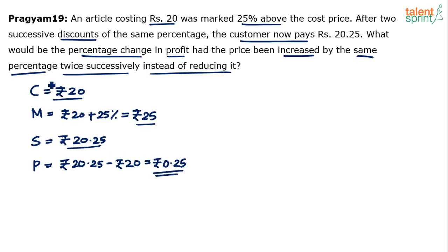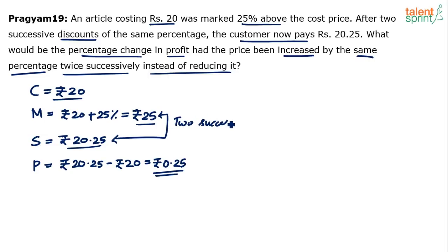We know the cost price. The article was marked at Rs.25, and after two discounts the selling price is 20.25, giving a profit of 25 paisa. We haven't yet calculated the discount percentage — we need to find what two successive discounts brought the price from Rs.25 down to Rs.20.25.